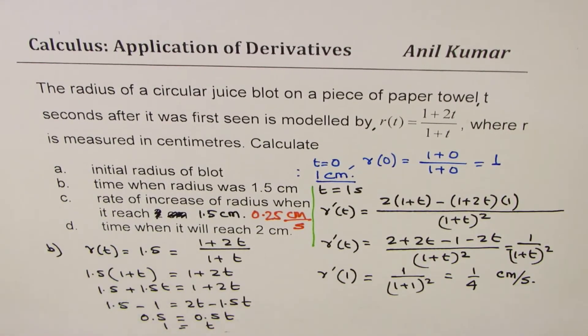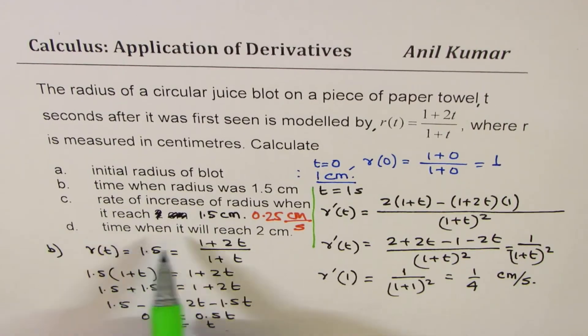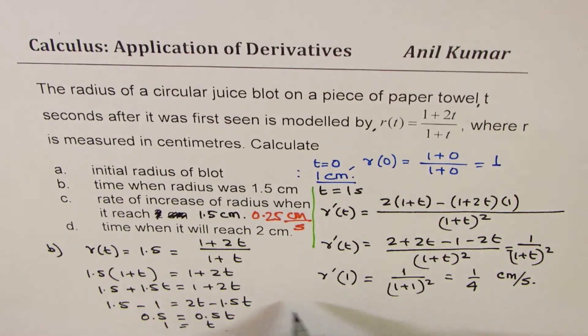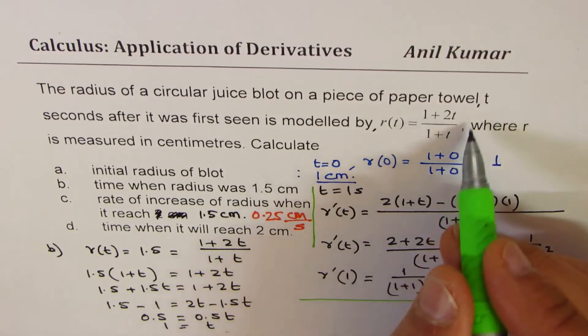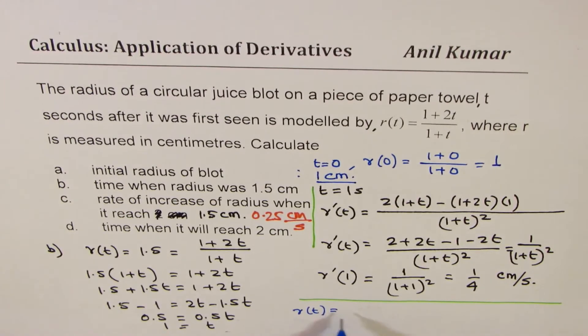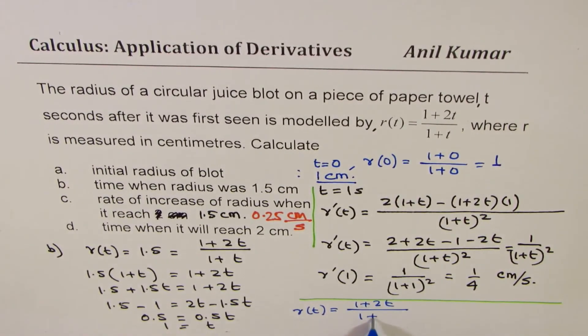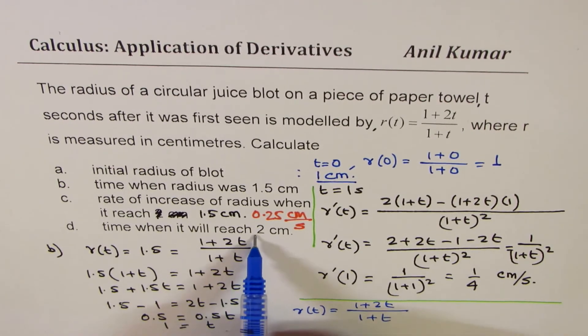The last question here is: determine the time when it will reach 2 centimeters. Now let's analyze the function. We are given r(t) = (1 + 2t)/(1 + t). The question is, will it ever reach 2 centimeters?